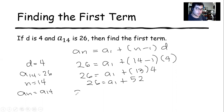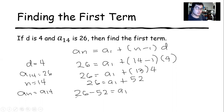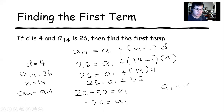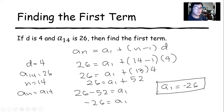We transpose plus 52 to the other side, so it becomes negative. So 26 minus 52, which is negative 26. Finally, our a sub 1 is negative 26. So negative 26 is our first term for this sequence.